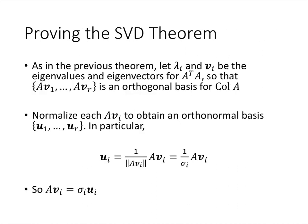We start by getting λᵢ and vᵢ as eigenvalues and eigenvectors for A transpose A, so that Av₁ through Avᵣ form an orthogonal basis for the column space of A. We normalize each Avᵢ by dividing by its length σᵢ to create unit vectors u₁ through uᵣ — an orthonormal basis for the column space of A. So uᵢ = (1/σᵢ) Avᵢ, which gives the key relationship Avᵢ = σᵢ uᵢ.